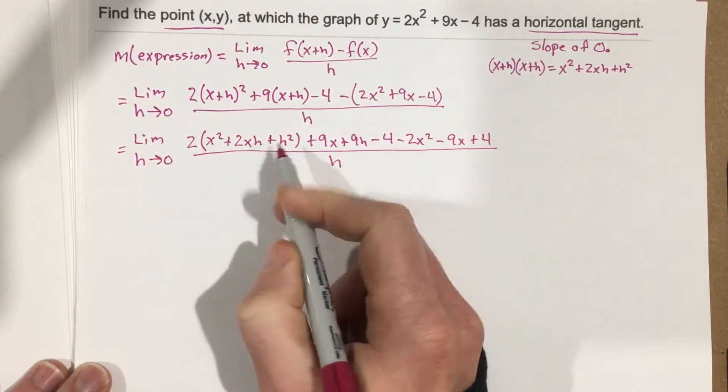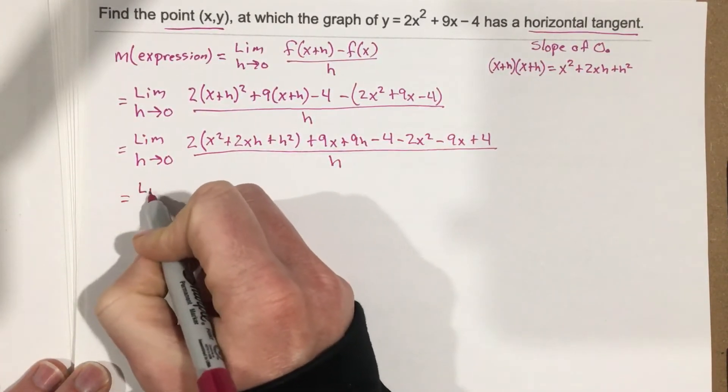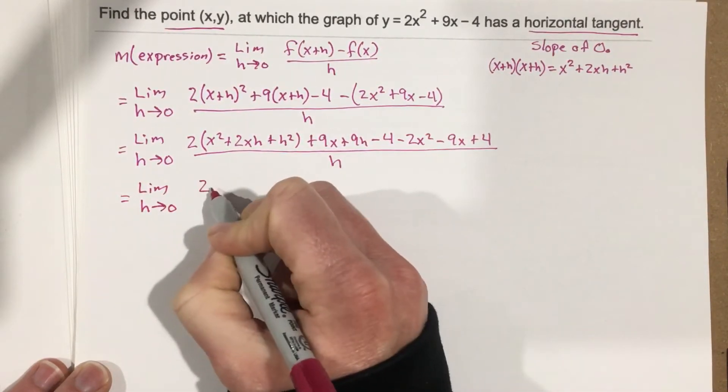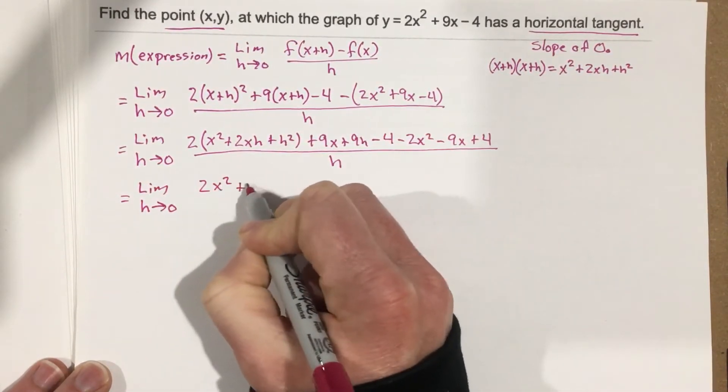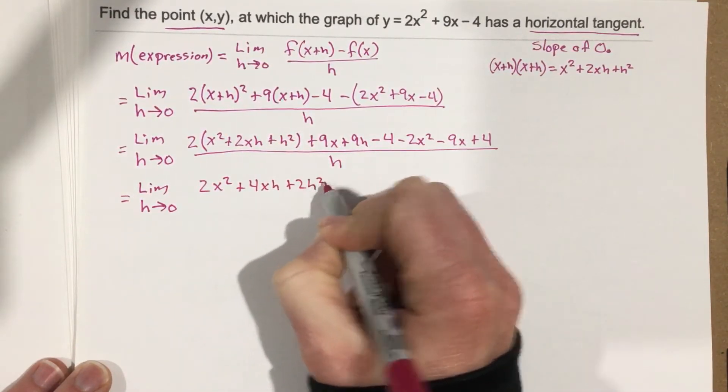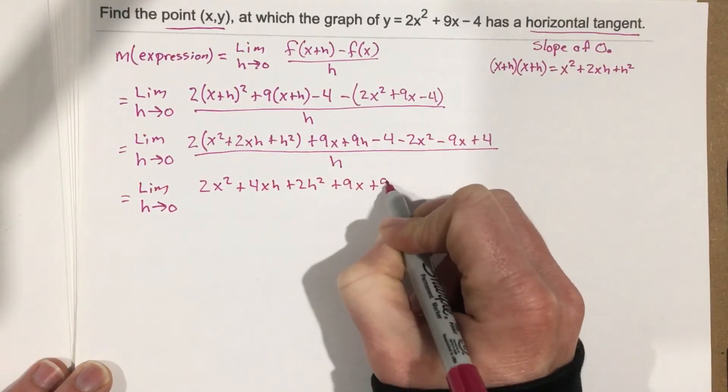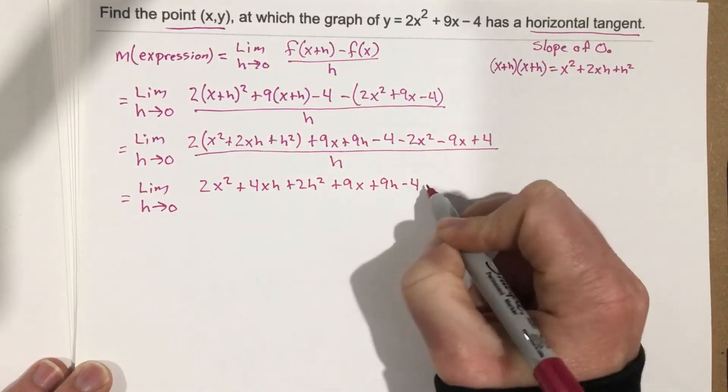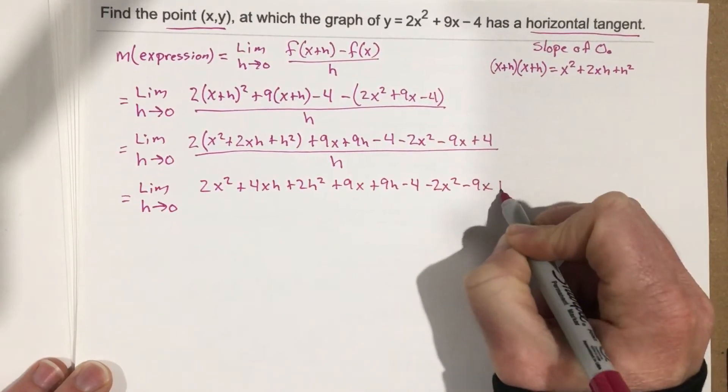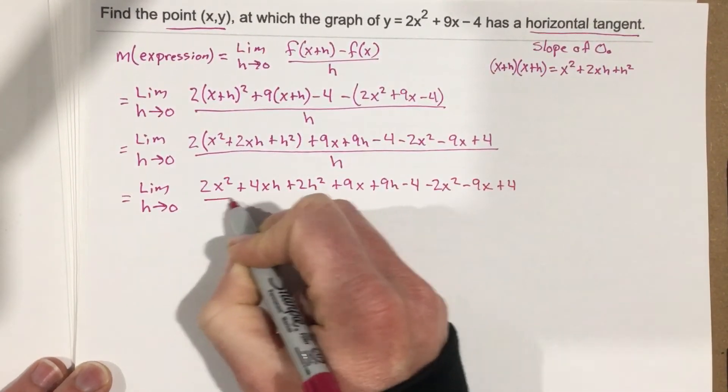I'm going to distribute the 2 to each term, so that's going to be limit as h approaches 0, 2x² + 4xh + 2h² plus 9x + 9h minus 4 minus 2x² minus 9x plus 4. That's all over h.